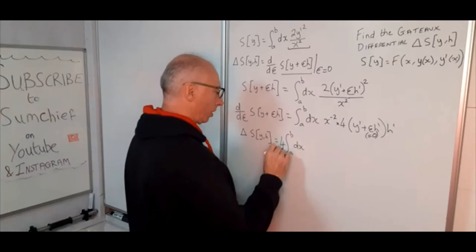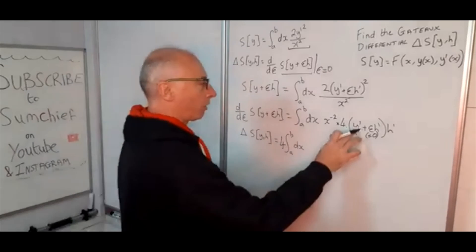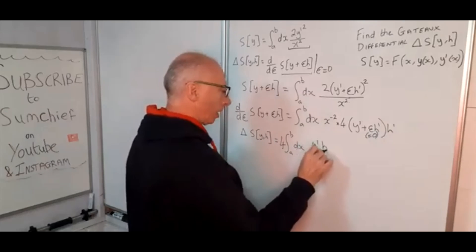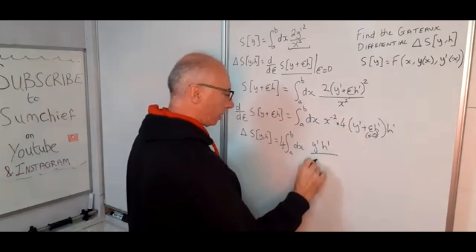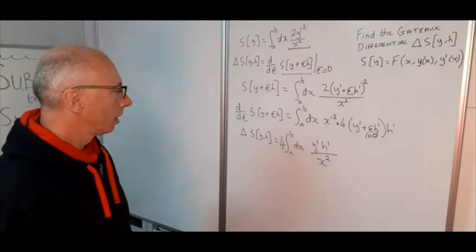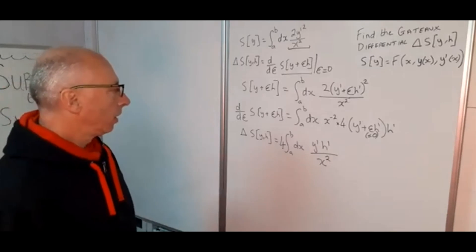And then we have got y prime h prime, so we have got y prime h prime, and then the x squared can come back and go into the denominator. So that basically is our Gateaux differential.